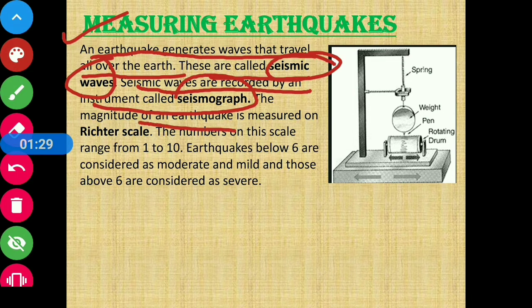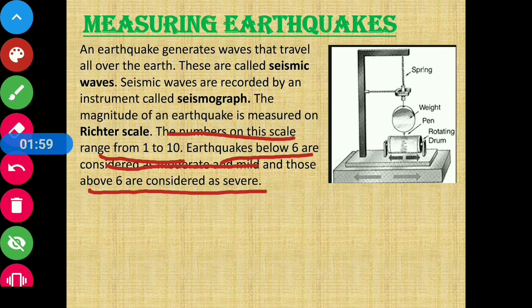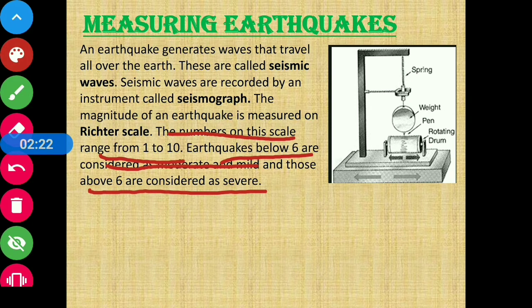The magnitude of an earthquake is measured on the Richter scale. The earthquake's magnitude is represented by a numerical value. The numbers on this scale range from 1 to 10. Numbers below 6 are considered moderate or mild earthquakes, and those above 6 are considered severe — meaning very devastating and very harmful earthquakes.